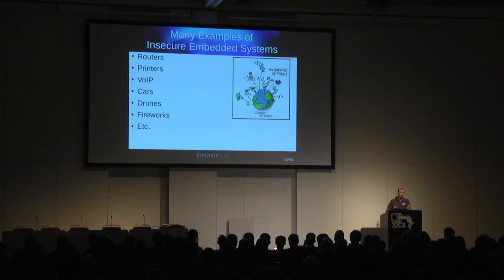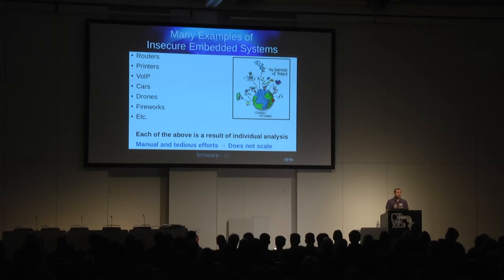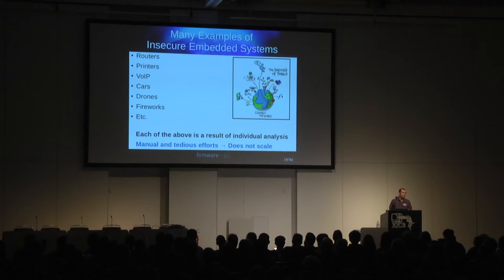It's not news that embedded devices are insecure. We've been seeing this trend from around 2005 or 2006: increasingly more examples every day of embedded devices being insecure — routers, printers, VoIP phones, cars shown to be remotely hackable, drones, fireworks, all kinds of PLC, SCADA, industrial control systems. The thing is, most of these white papers or research was done in an individual manner — taking a particular device or firmware and analyzing it end to end. It involves a lot of tedious manual work and scripting, and basically it cannot scale.